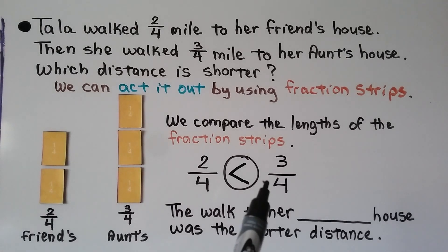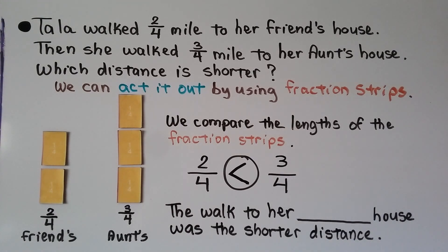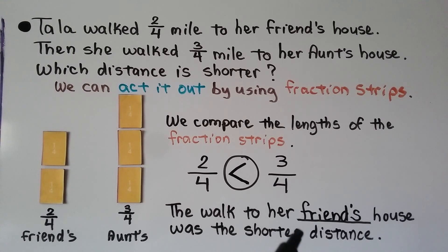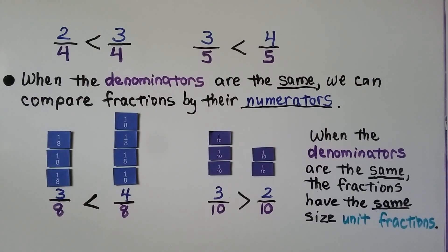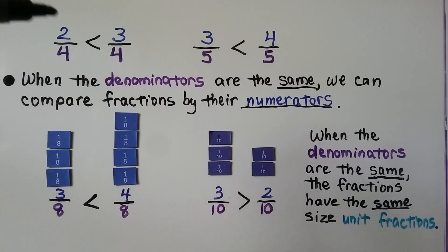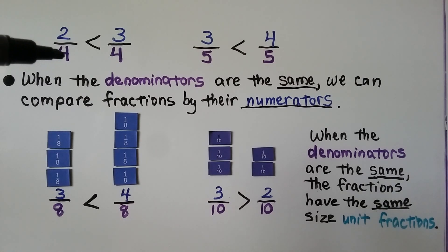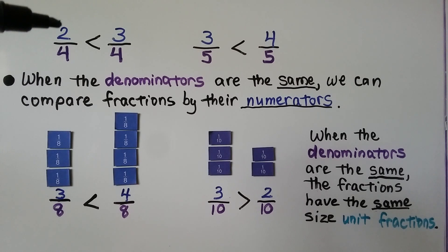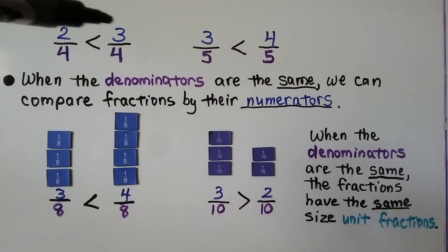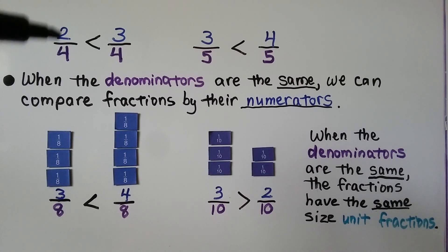Because three-fourths is the greater fraction, we have the big open part facing the greater fraction. The walk to her friend's house was the shorter distance. It's very important that we answer what was asked: which distance is shorter? The two-fourths to her friend's house. When the denominators are the same, we can compare fractions by their numerators. Both fractions have a denominator of four, so we just look at the numerators two and three. Three is bigger, so three-fourths is greater than two-fourths.